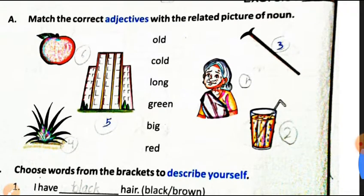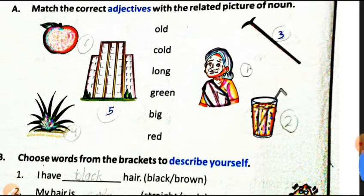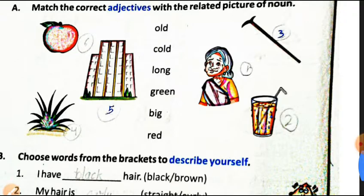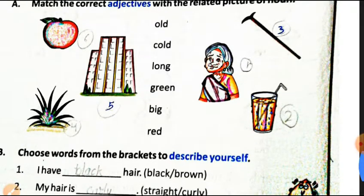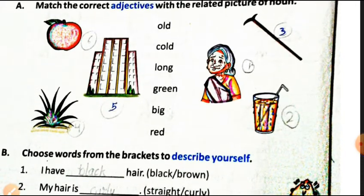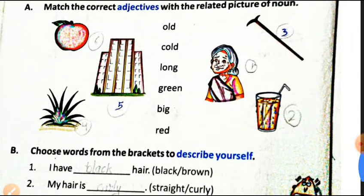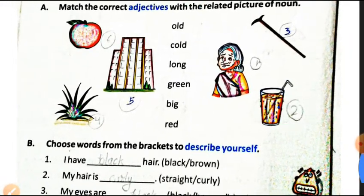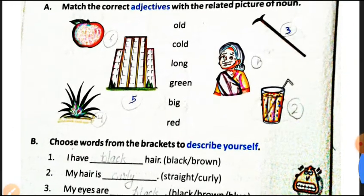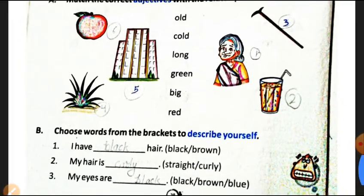Now we are matching correct adjectives with the related picture. An apple — how does an apple look? Red. A big building. Green grass. An old woman. A cold ring. And this is a long stick.